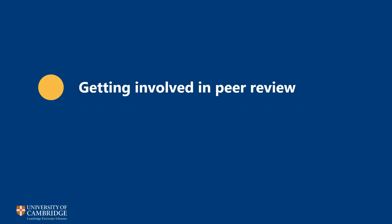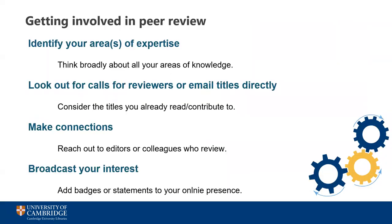Now that we understand what peer review is and what's expected, how do you actually get involved in the process if you're not already? There's actually a general shortage of available peer reviewers, so most editors will welcome an application if you are interested in reviewing. It's important to identify your areas of expertise and your current interests — consider all the areas where you could review, not just your main subject. Be honest about your areas of expertise and the level of knowledge you have in these, so that editors can assign the appropriate papers to you. Look out for calls to review or emails that come around on email lists. Think about the journal titles that you regularly read, as these are likely to reflect your interests and be a good starting point. You may find that you approach a particular title and are actually asked to review for another title by the same publisher — that does sometimes happen.